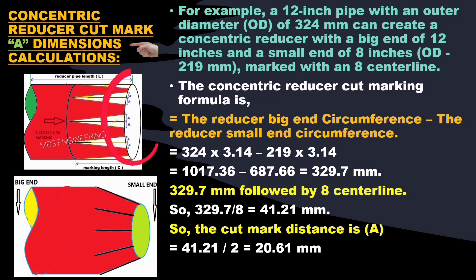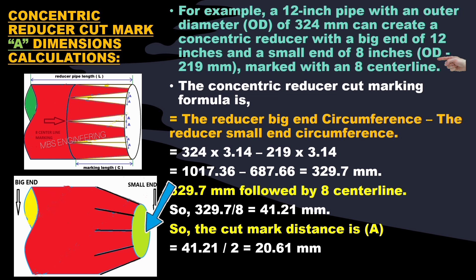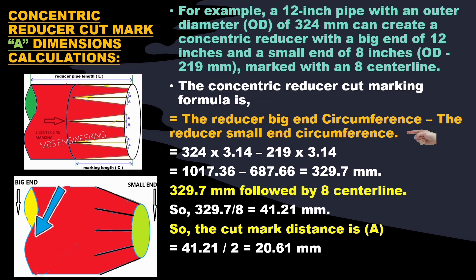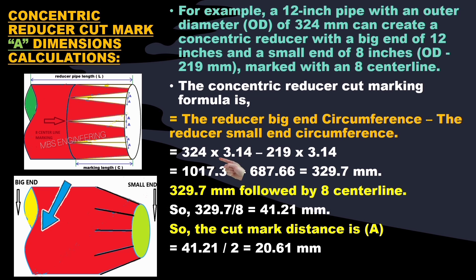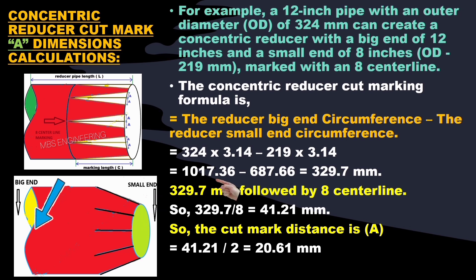We will look at a sample example for calculating the concentric reducer cut mark dimension A. A 12-inch pipe with an outer diameter of 324 mm will create a concentric reducer with a big end of 12 inches and a small end of 8 inches (OD 219 mm), marked with 8 centerlines. The cut marking formula A equals the big end circumference minus the small end circumference: (324 × 3.14) − (219 × 3.14) = 1017.36 − 687.66 = 329.7 mm.